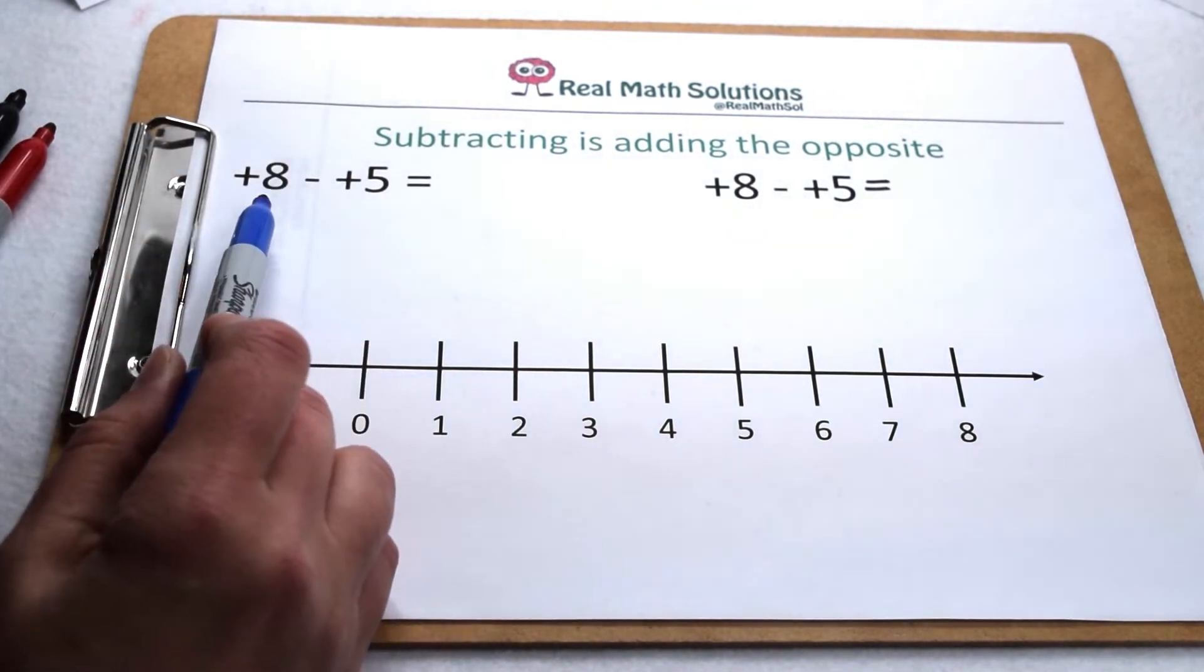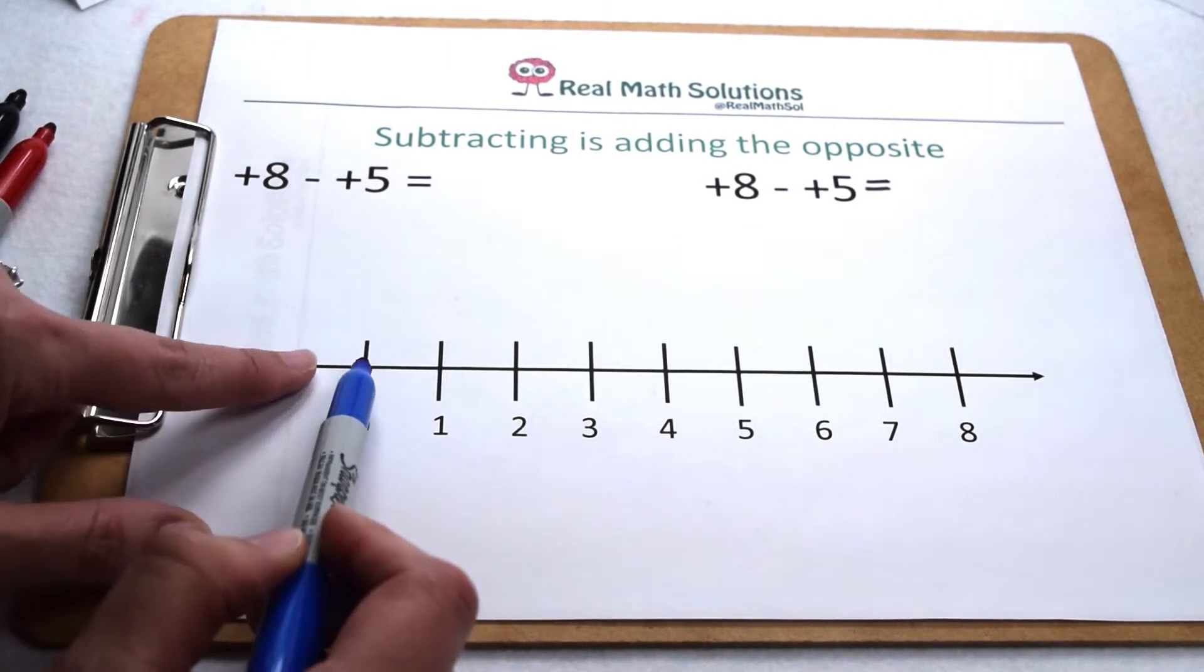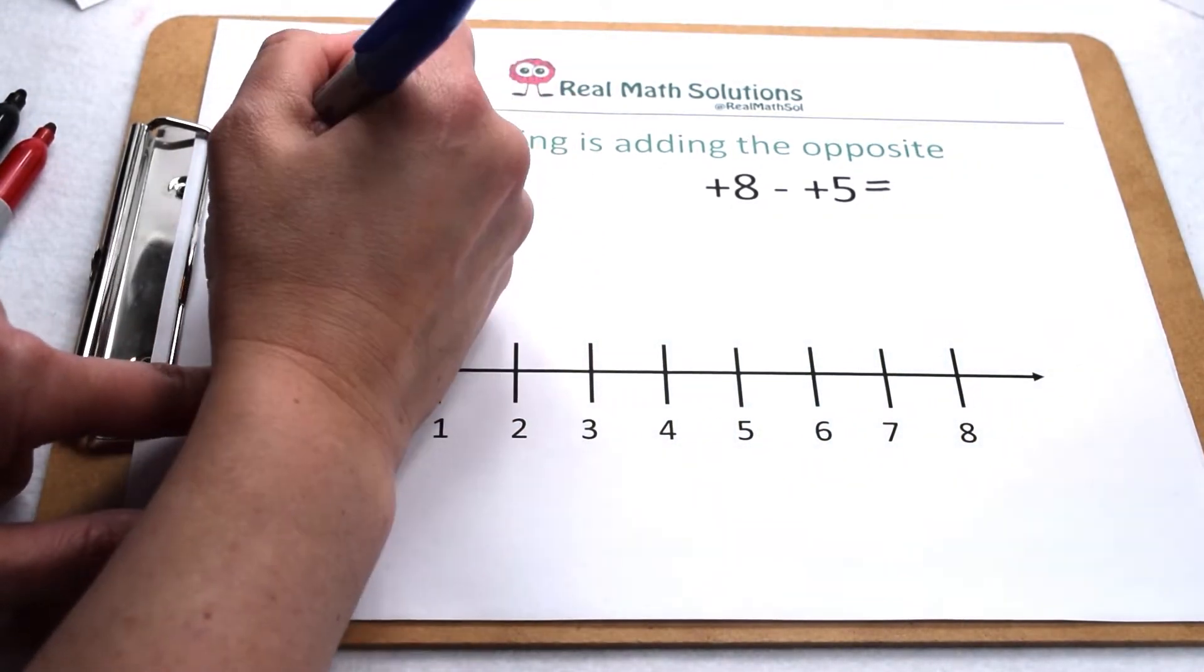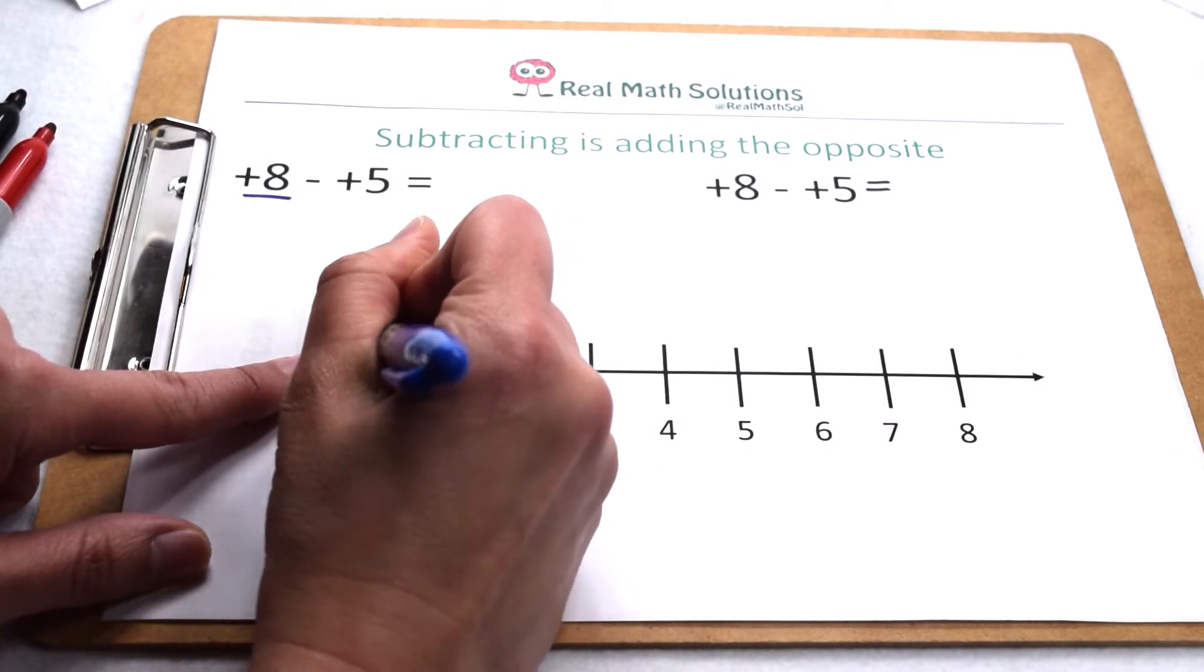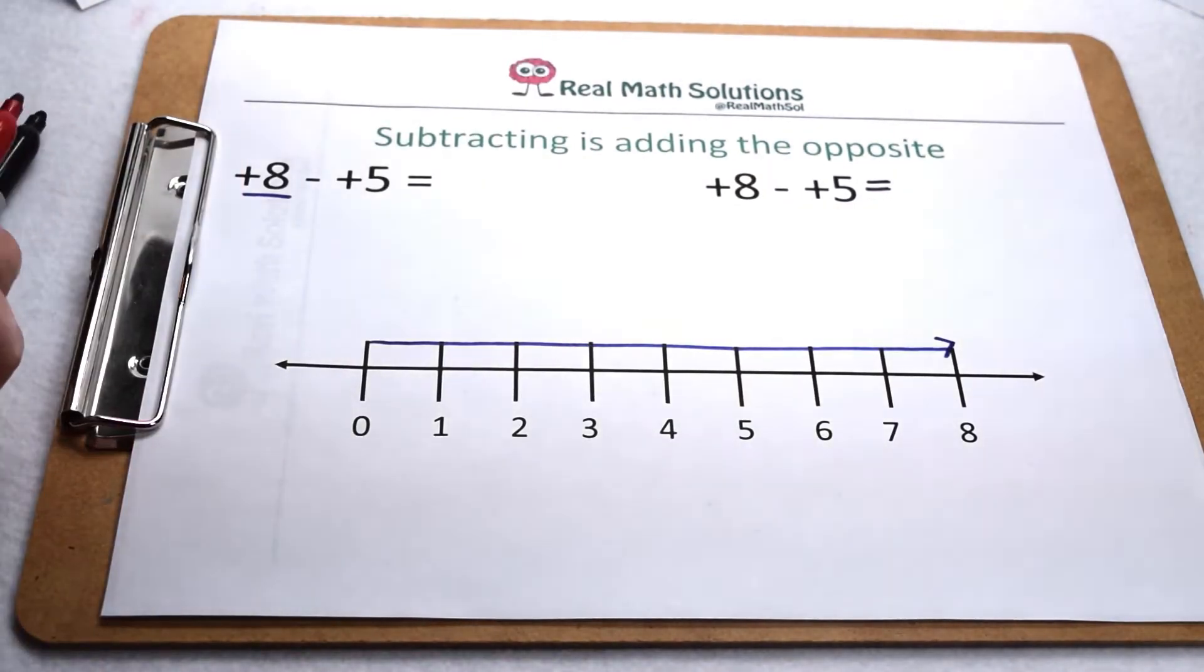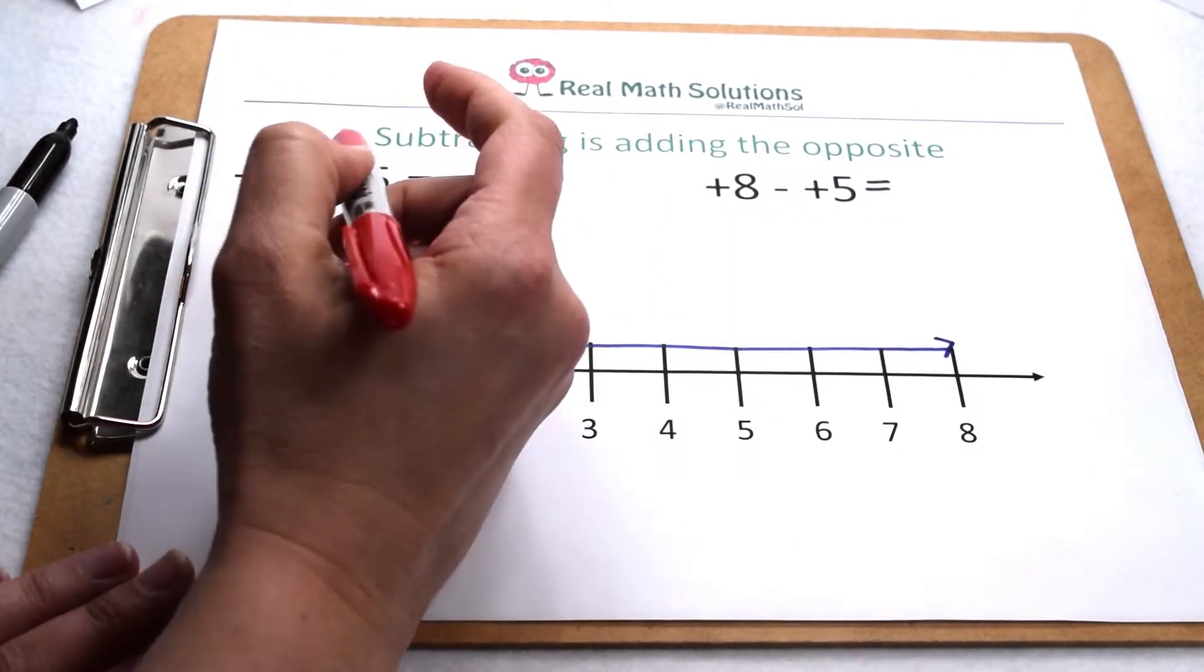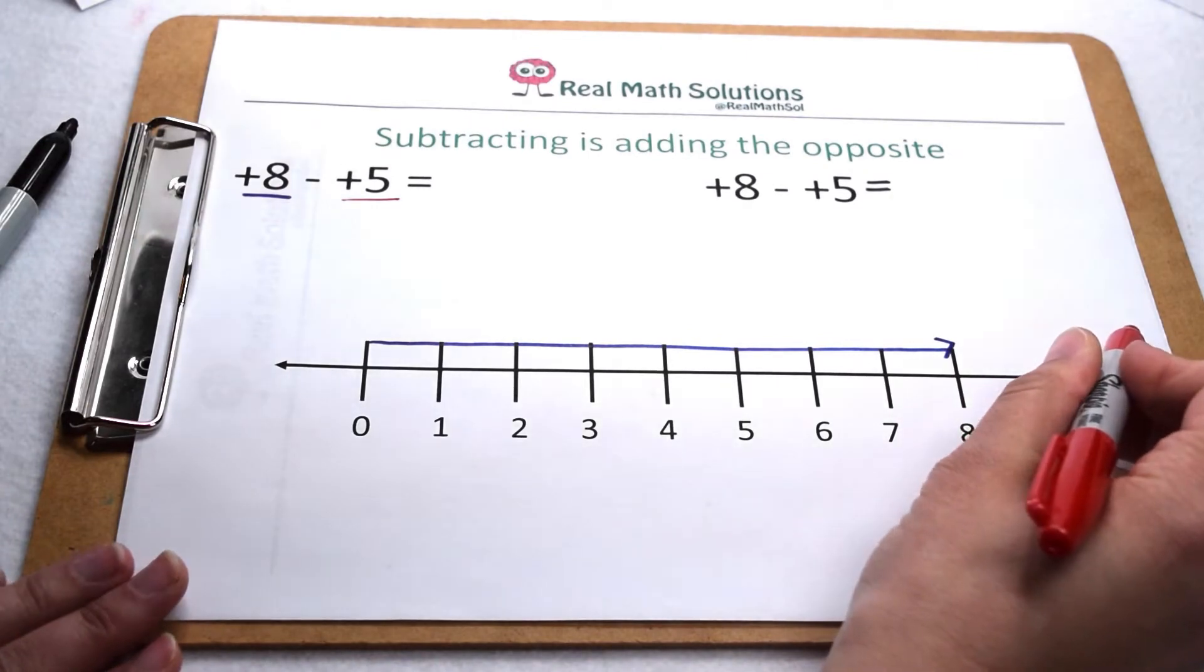Let's start with positive 8 minus positive 5. To illustrate positive 8 minus positive 5, I would start at 0 and positive 8 would send me 8 places to the right. From there, I want to take away positive 5. Positive 5 would normally send me 5 more places to the right,